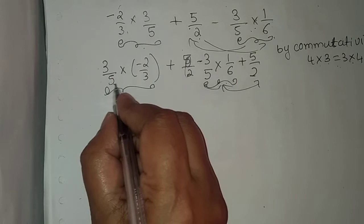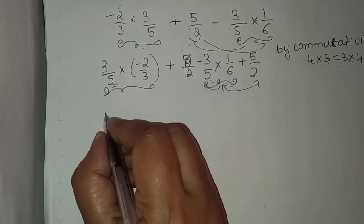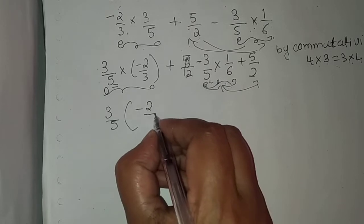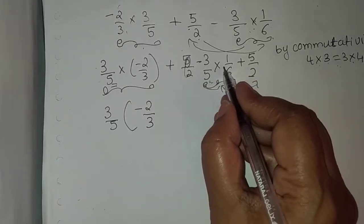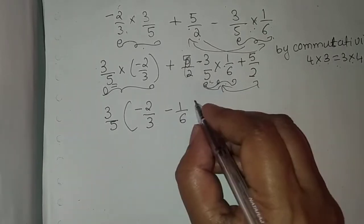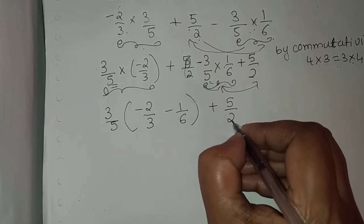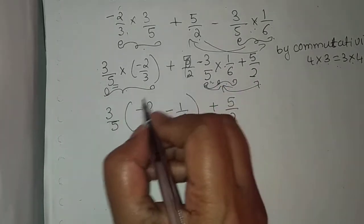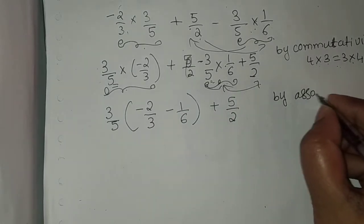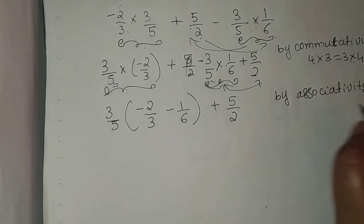Next, 3/5 is common in both terms, so we take 3/5 outside. The remaining is: 3/5 × (minus 2/3 minus 1/6), with 5/2 remaining as it is. This taking of the common factor is done by the property called associativity. We are using associativity for interchanging these numbers.